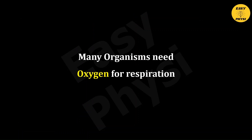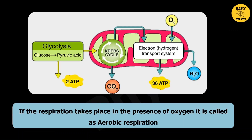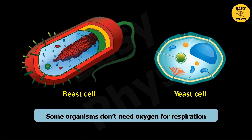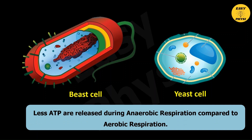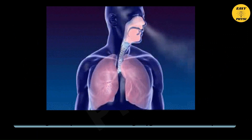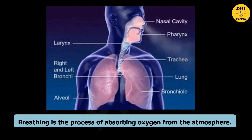Many organisms need oxygen for respiration. If respiration takes place in the presence of oxygen, it is called aerobic respiration. Some organisms don't need oxygen for their respiration — this is called anaerobic respiration. Less ATP is released during anaerobic respiration compared to aerobic respiration, and the energy released in aerobic respiration is greater. For aerobic respiration to continue, a continuous supply of oxygen is needed. This is done by breathing, which is the process of absorbing oxygen from the atmosphere.